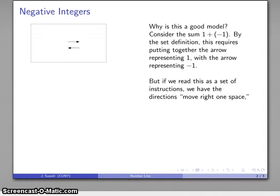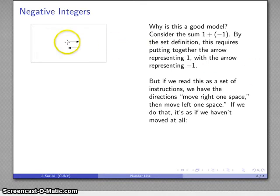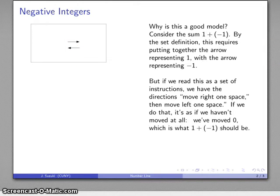Now I can choose to interpret this as follows. I want to think about this right pointing arrow as the direction take one step to the right, and I want to think about this left pointing arrow as the direction take one step to the left. And if I think about the set of all of these things put together, if I take a step to the right and take a step to the left - we're doing the time warp, old reference - but if I take a step to the right and a step to the left, I haven't moved. I haven't gone any place. And it's as if I've moved zero, which is what we want 1 + (-1) to be.